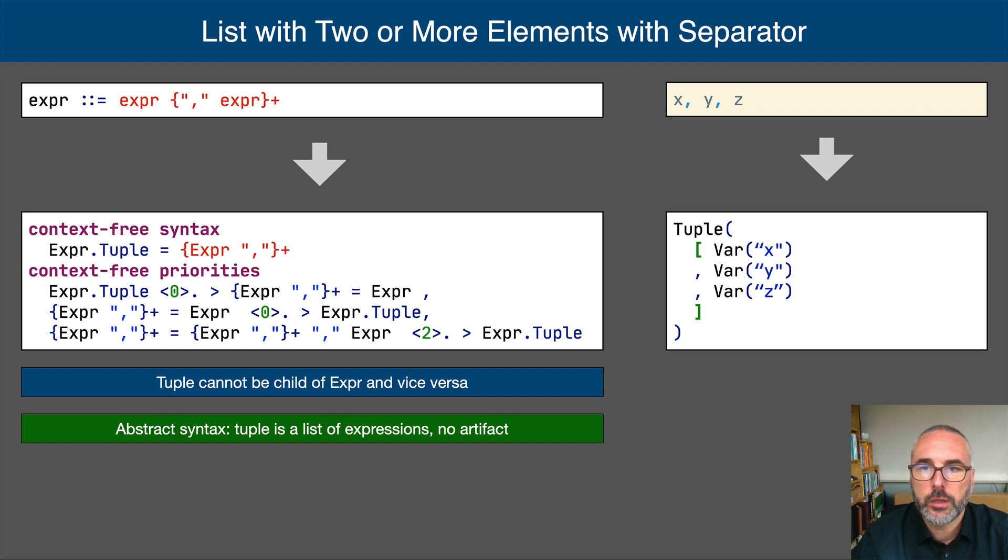A final list idiom in OBNF is for a list with separator consisting of at least two elements. Here we see how it is used to define the syntax of tuple expressions. These are encoded by an element followed by a non-empty list with the usual unfortunate abstract syntax. In SDF3, we can encode this by means of a simple non-empty list with separator. The fact that a tuple cannot be used without parentheses as a child of such a list, and vice versa, can be encoded using non-transitive disambiguation rules as you see on this slide.